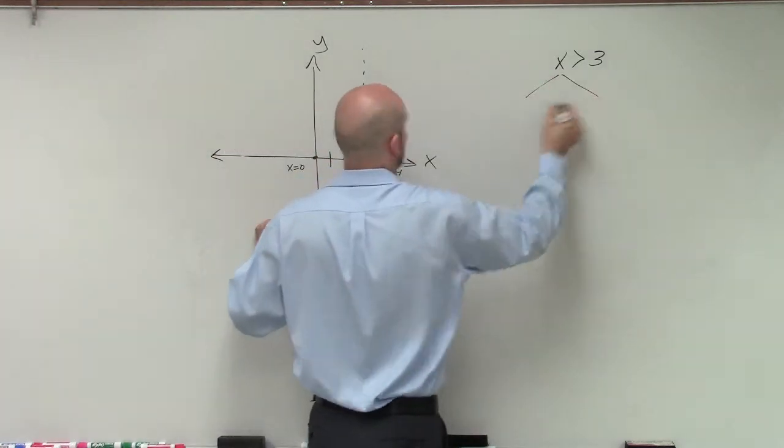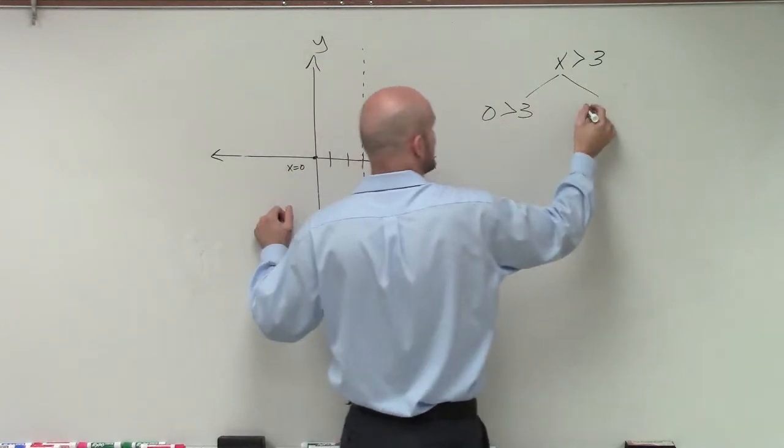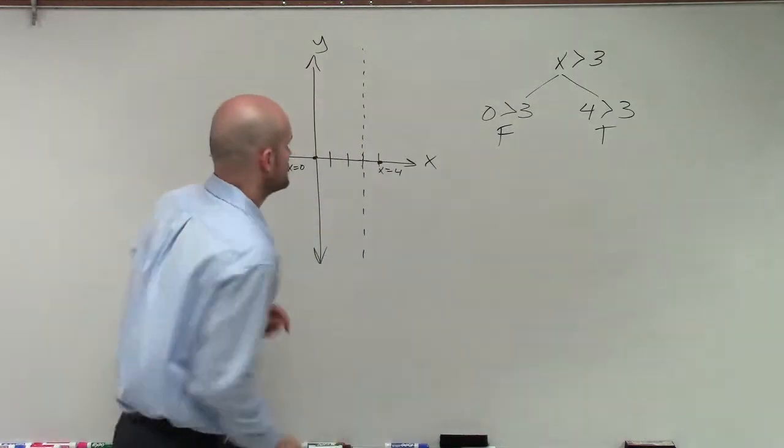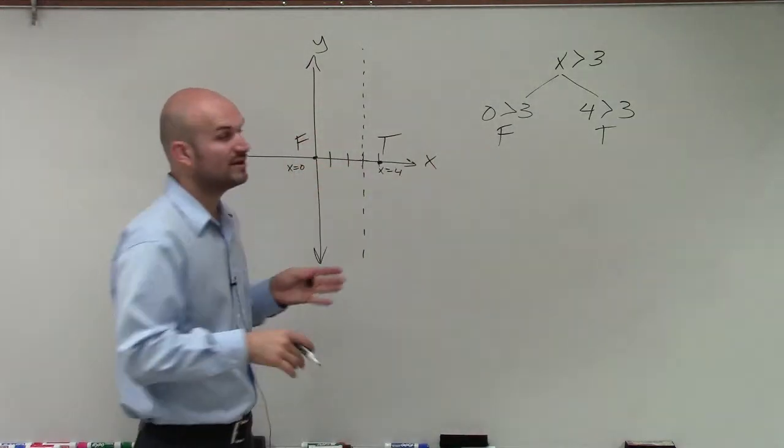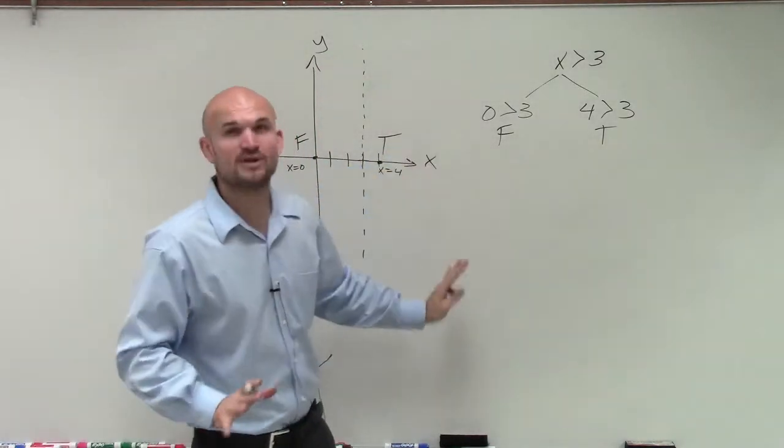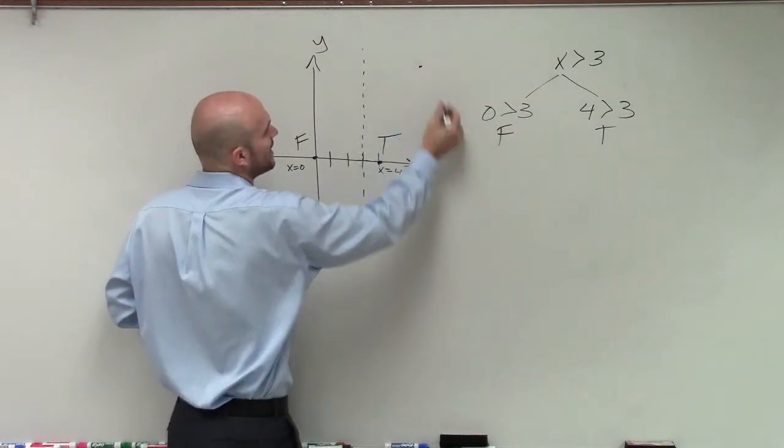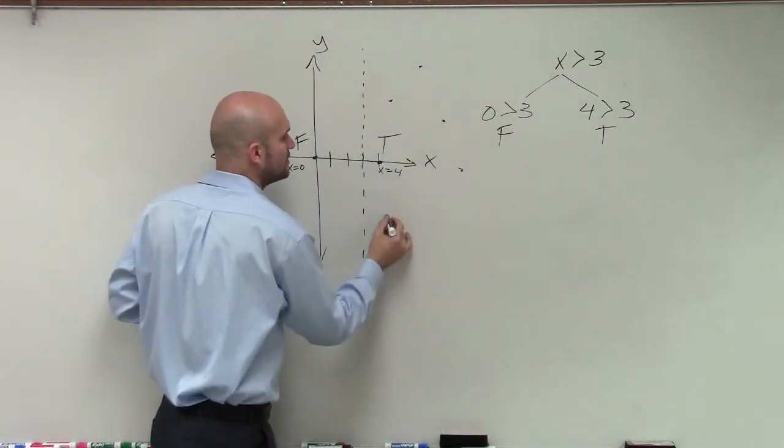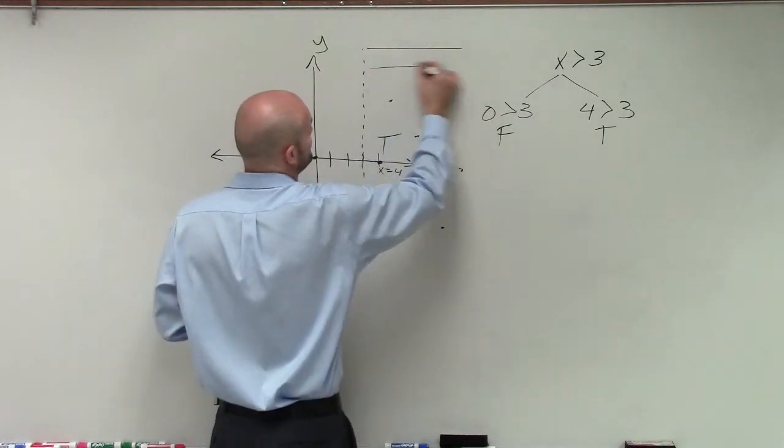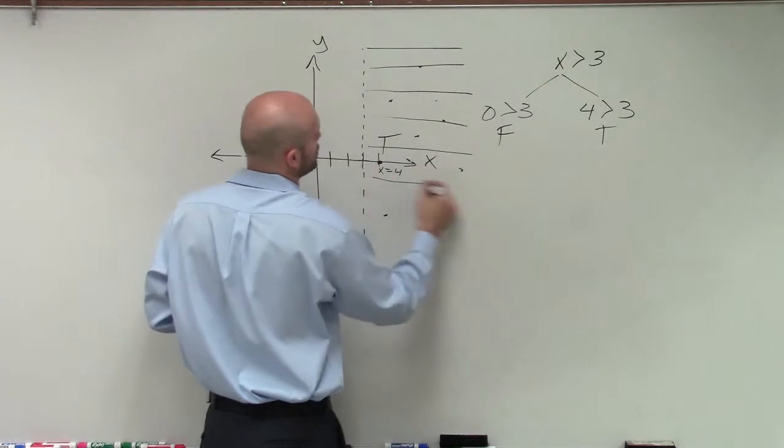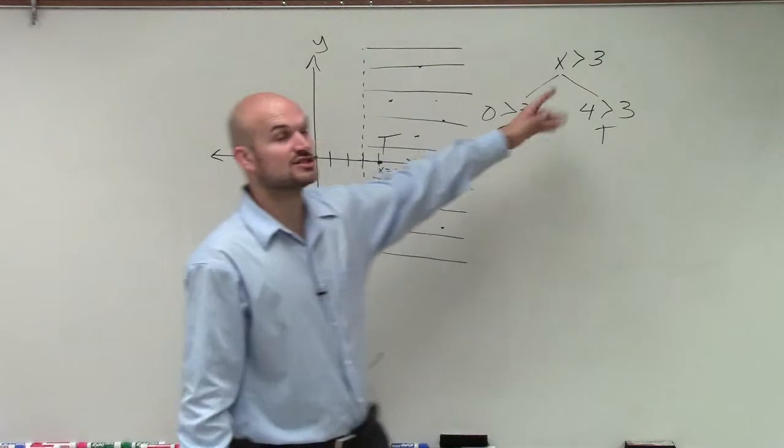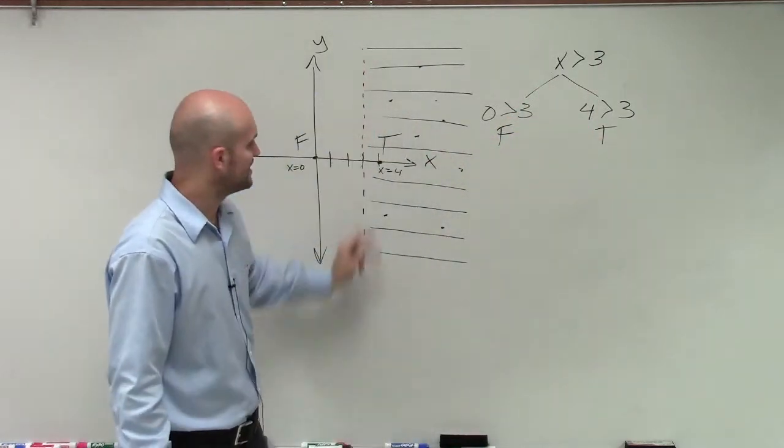Well, if I have 0 is greater than 3, or I could say 4 is greater than 3, we know that this is false and that's true. So since this is true and that's false, what that's going to mean is all the points to the left of this line are going to be false, and all the points to the right are going to be true. It doesn't matter where I pick a point, all of these points are going to be true. So to represent all those points, I'm just going to have some shaded lines over towards our true solution. And just make sure since our boundary line, since it's greater than and not greater than or equal to, it's going to be a dashed line.